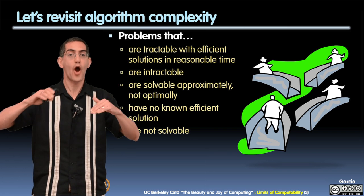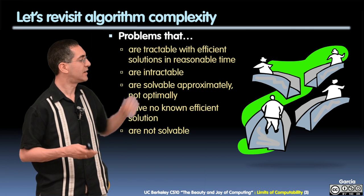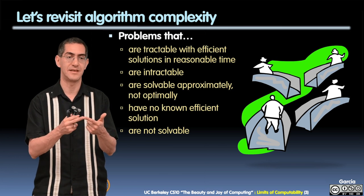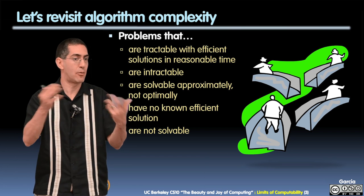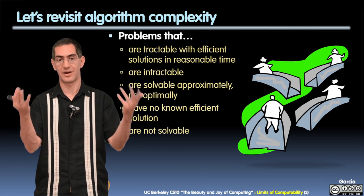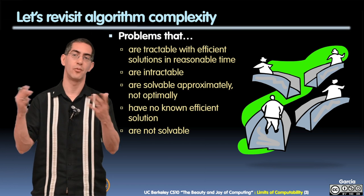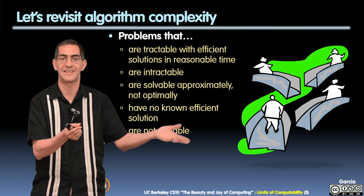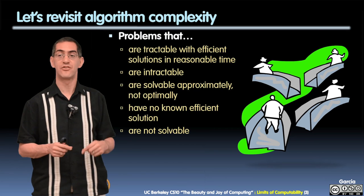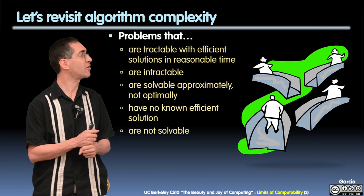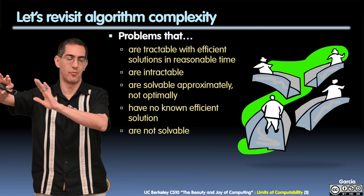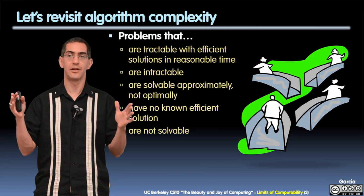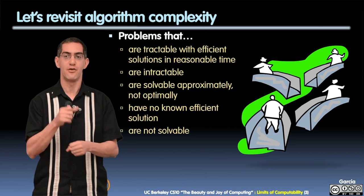In the family of what things are hard for a computer, we have different ranges. Those range from problems that are tractable with efficient solutions in reasonable time — that's what we like. Then there are intractable problems we can only solve approximately but not optimally, meaning we can guess the best solution but not get the exact answer. Some have no known efficient solution at all. And some are not solvable at all — that last category is the one that's really going to stretch your brain.